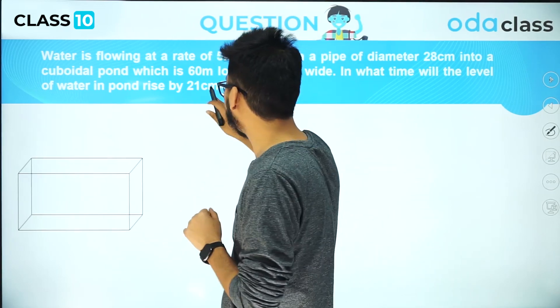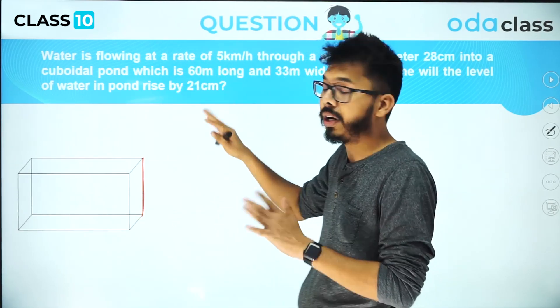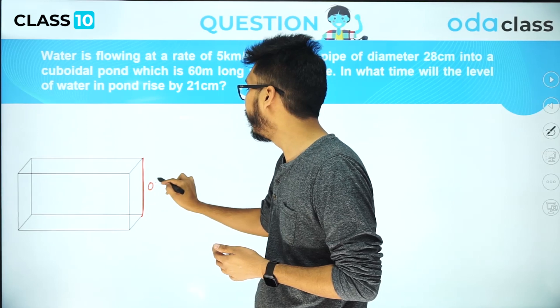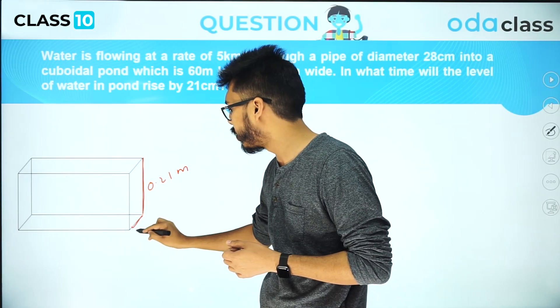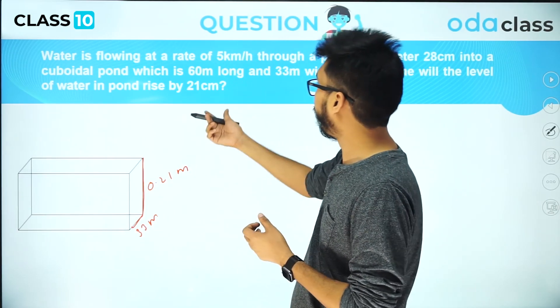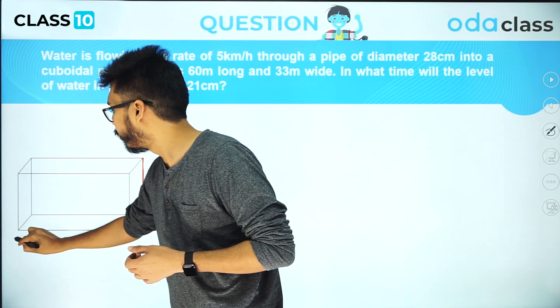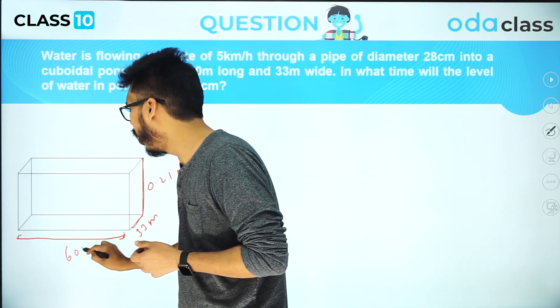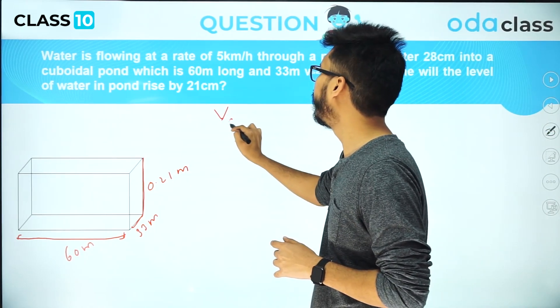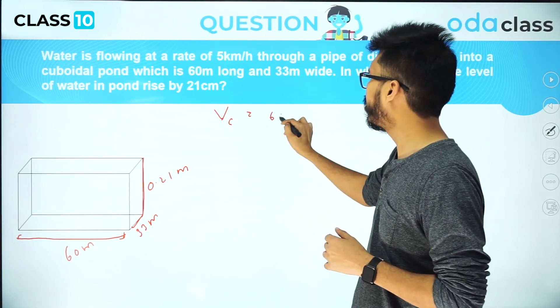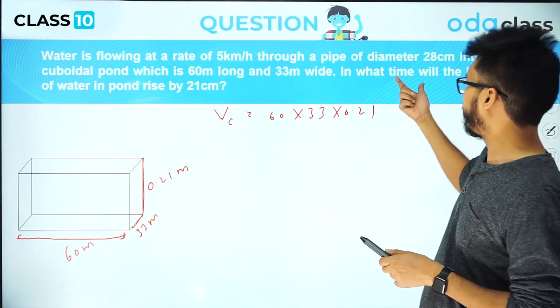The cuboid height is given as 21 centimeters, so I'm going to take it in terms of meters, so everything I'm converting to meters. This will become 0.21 meter. The width of this cuboid is 33 meters and the length is 60 meters. The volume of the cuboid is given by length × width × height, so volume of cuboid Vc will be 60 × 33 × 0.21.